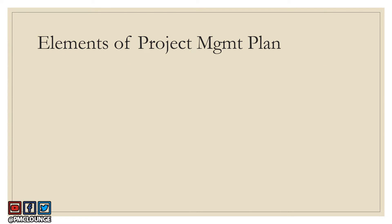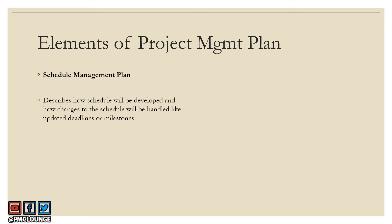The next document is the schedule management plan, which is the output of the plan schedule management process. This document describes how the project schedule will be developed — how you're going to create the schedule to begin with — and how changes to the schedule will be handled, such as updated deadlines or milestones and the process needed to address such changes.